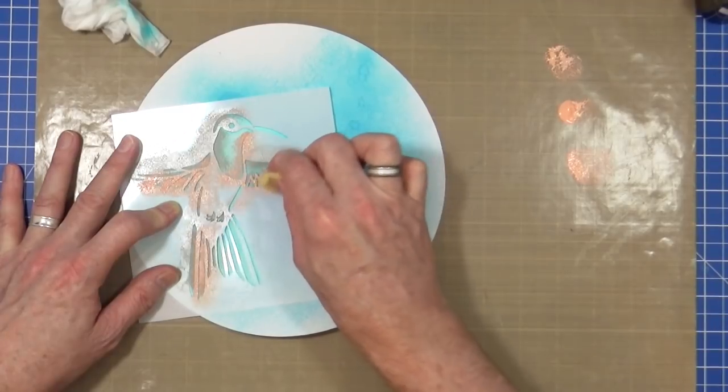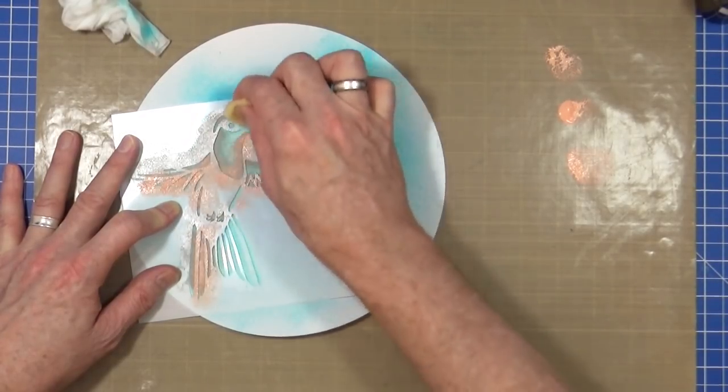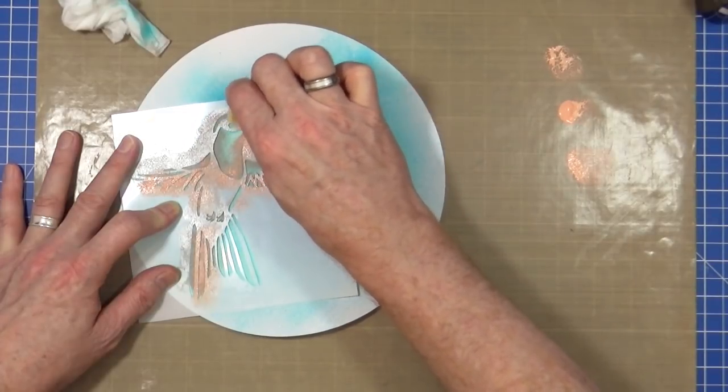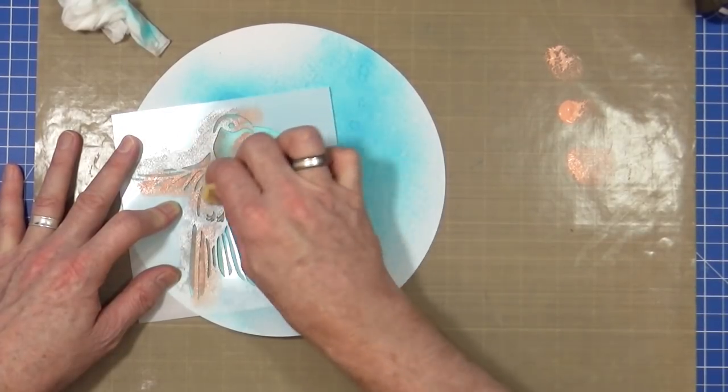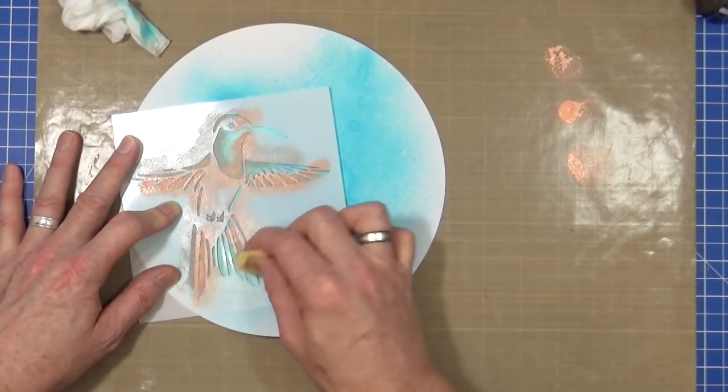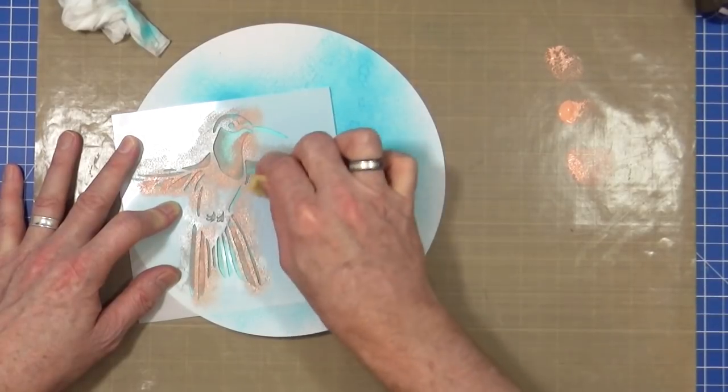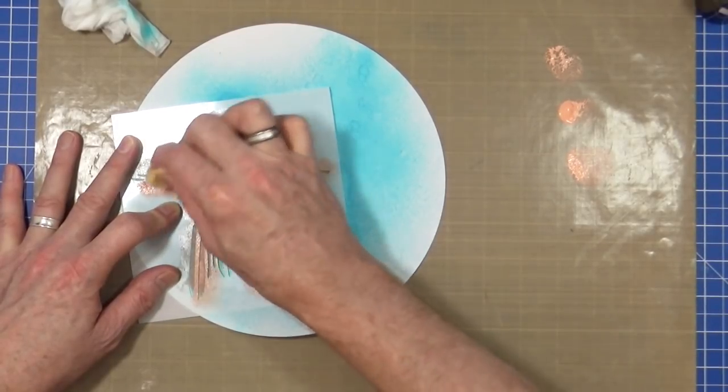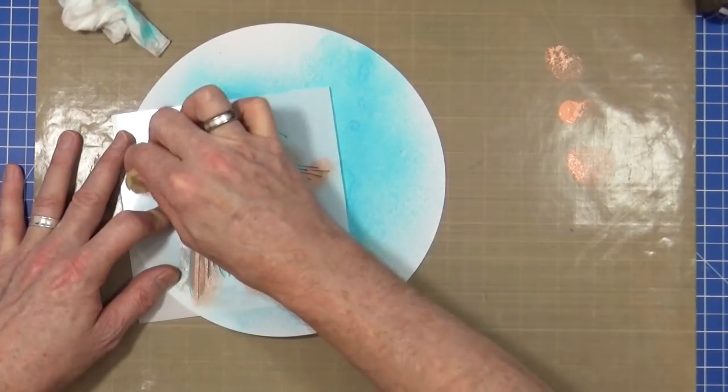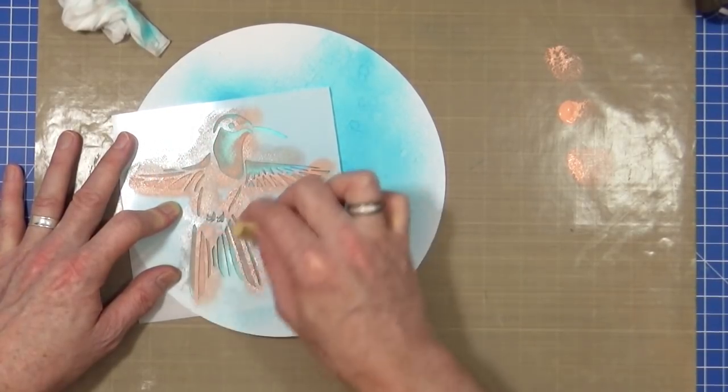And then start putting a little bit of that color over the top. I know hummingbirds aren't this color but we've got those colors, a little bit on the head, we've got these colors that we're using as part of the challenge. So it's an art journal page so artistic license is allowed.